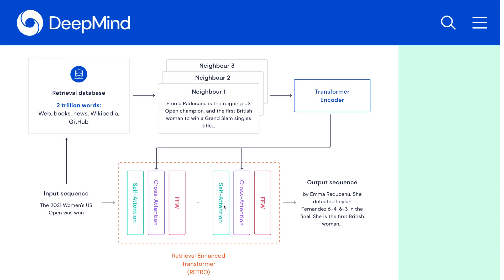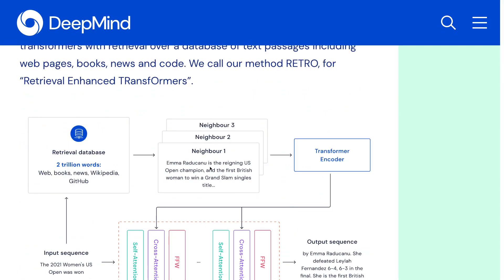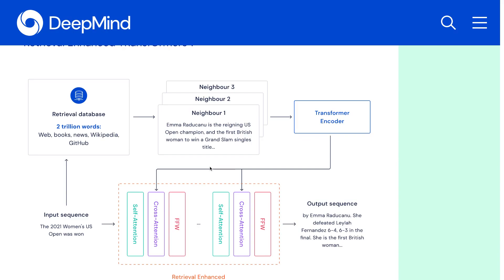This leads to outputs that are more factually relevant to what's in the database and also less random — more factually correct, it seems from the results in the paper. And the main finding is that this language model achieves similar performance with far fewer parameters: with seven billion parameters, they achieve the same performance as models with over 100 billion parameters.